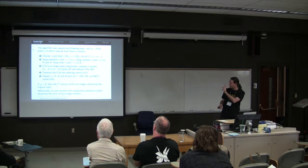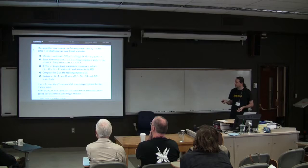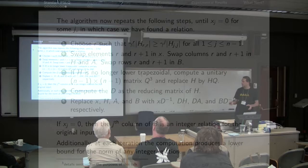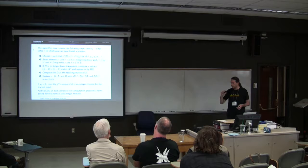If we're swapping x, we're just swapping the r, r plus 1th element. We swap the columns in h and a, and the rows in b. Now it's possible h may not be lower trapezoidal, in which case we have to compute a unitary matrix Q. I'm not going to give the details of this matrix, because it's very technical, very messy, and isn't actually needed for what I'm doing.